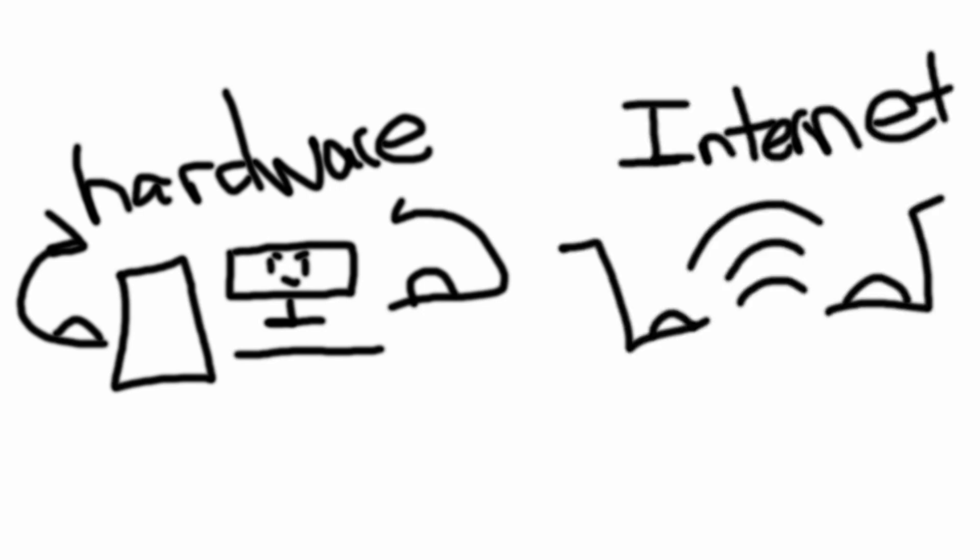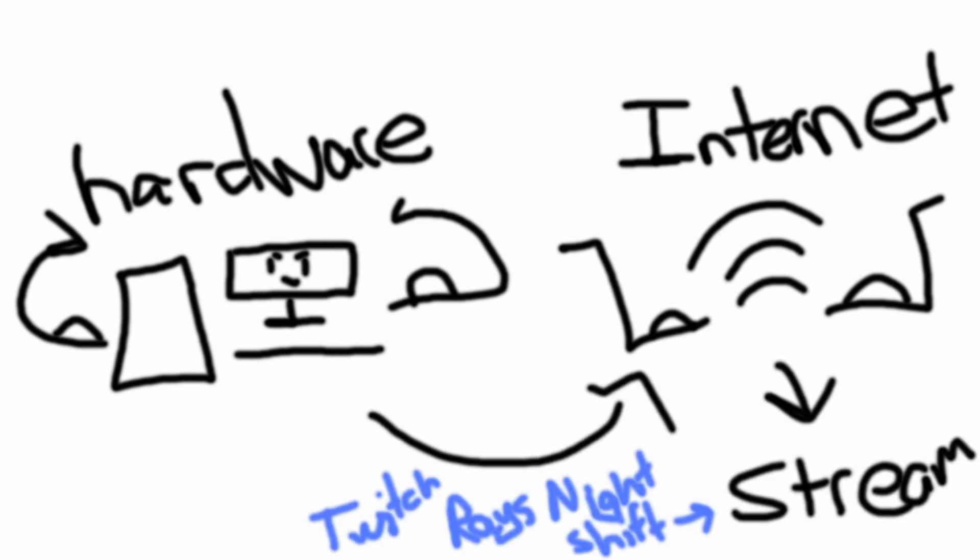First things first, there are two deciding factors. The first one is your hardware — can it keep up with the rendering? The second one is your internet — can it meet the demand to actually send out the signal from that render to the internet fast enough for everything to process correctly?